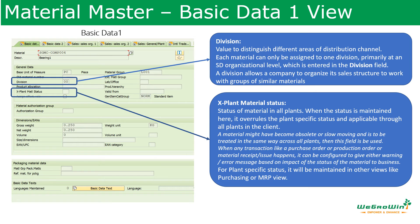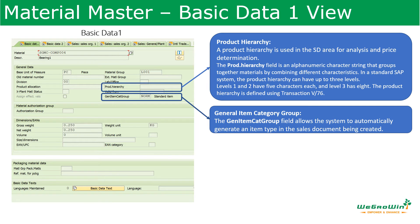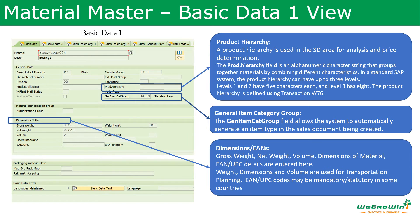Product hierarchy is used in the SD area for analysis and price determination. It is alphanumeric — level one and level two have five characters each, and level three has eight characters. It is defined using transaction VB76 and is maintained by the Sales and Distribution team. Next is the general item category group, which allows the system to automatically generate an item type in the sales document when it is created. We also have dimensions and EAN details — gross weight, net weight, volume, EAN, and UPC details are entered here and used for transportation planning.